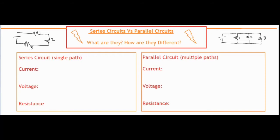Now if you take a look at each of my circuit drawings, I drew a schematic diagram of a series circuit and a parallel circuit. For our series circuit we have our battery over here where the electrons leave and they complete this loop, and they only have one path and one loop to travel through, as opposed to the parallel circuit where there's multiple branches and there's multiple loops for the electrons to travel through.